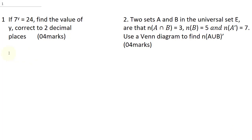Question 1 says, if 7 raised to power y is equal to 24, find the value of y corrected to 2 decimal places. Now for you to solve this, 7 raised to power y is equal to 24. So the best thing you need to do is to take the logarithm of both sides.